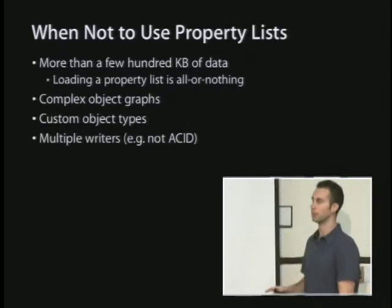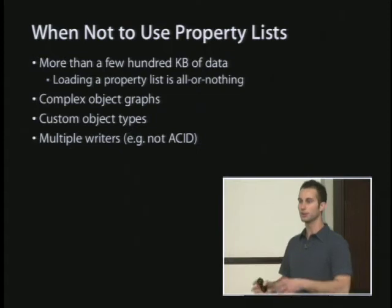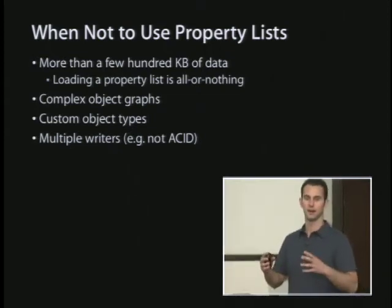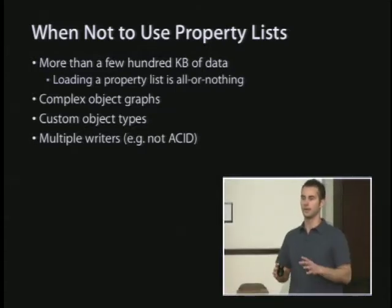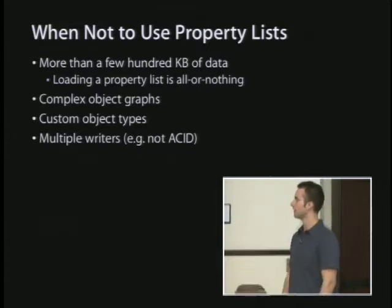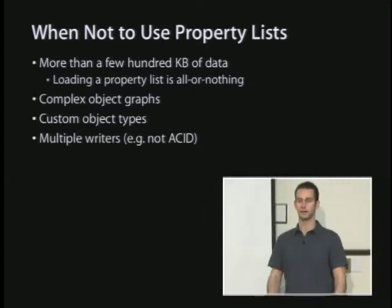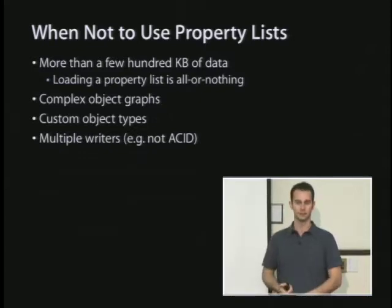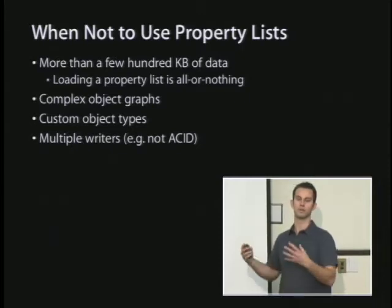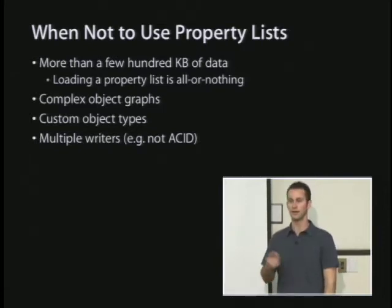You don't want to use property lists for really big data sets. If you have a few hundred megabytes of data, any time you load a property list it's entirely loaded into memory — an entire object graph is created. It's not good for random access, it's not good for complex object graphs, you can't have cycles, and you can't have custom object types.